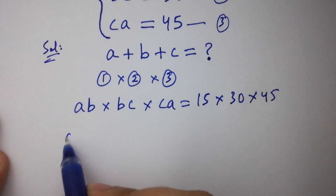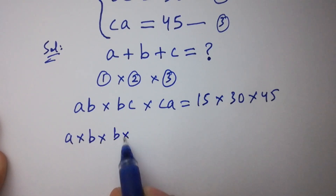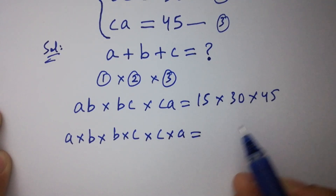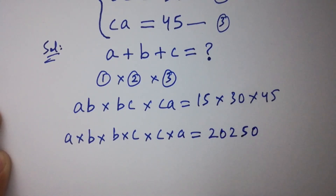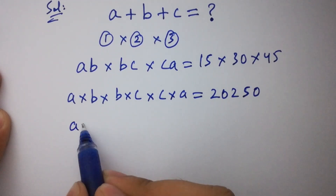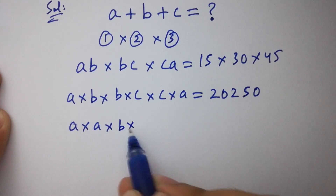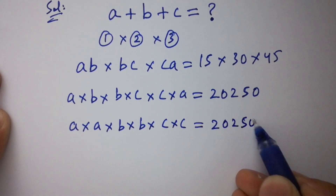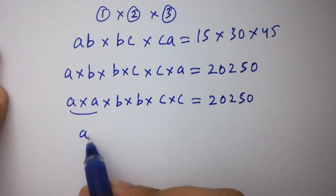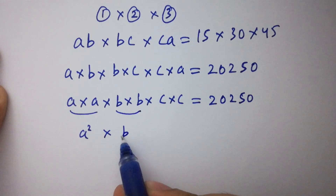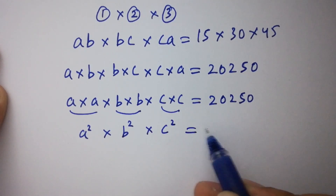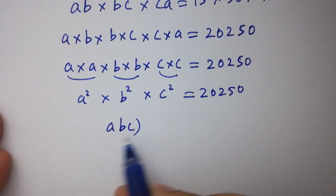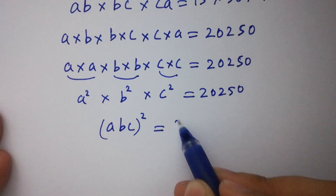It can be written as a times b times b times c times a equal to 15 times 30 times 45, which gives 20250. By rearranging, we have a squared times b squared times c squared equal to 20250. This is the same as abc all squared equal to 20250.